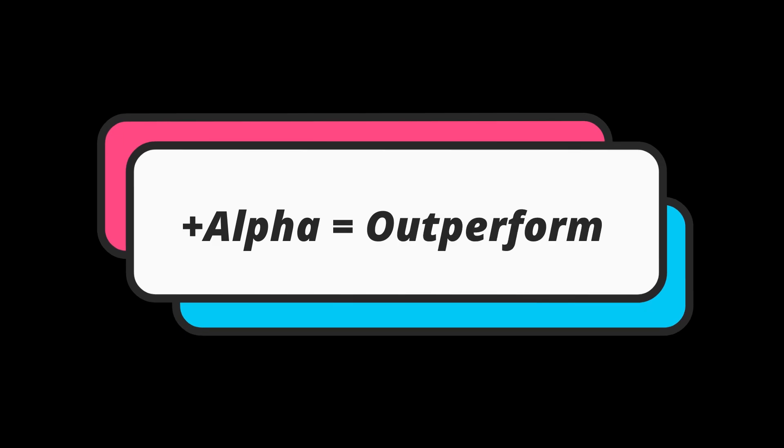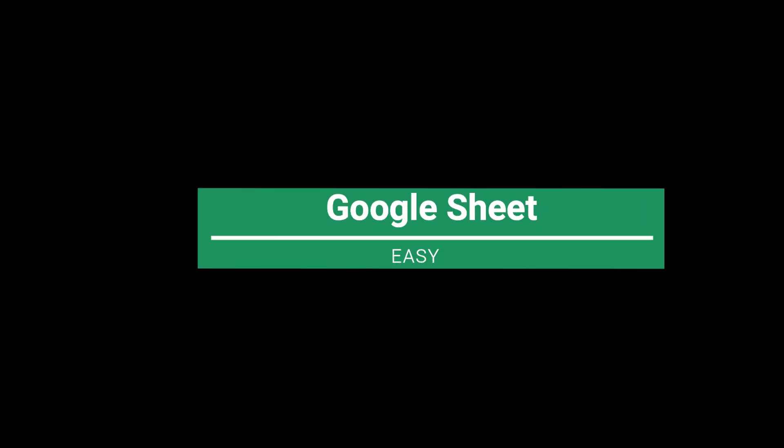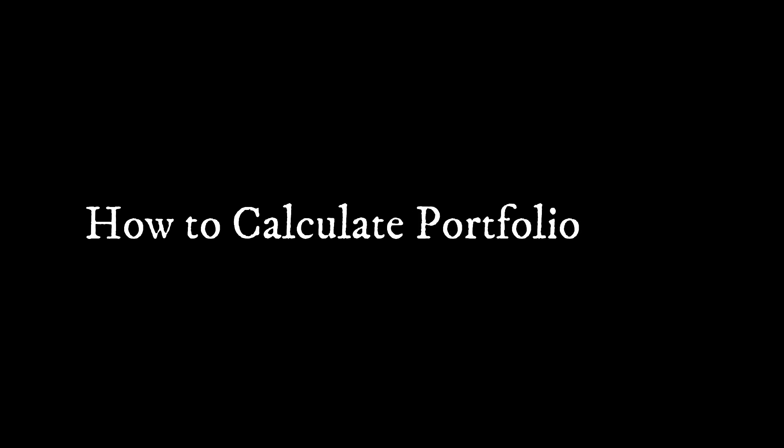If the alpha is positive, that means you have outperformed the market. Now it is a bit tricky to calculate alpha because every single day your stock price is moving up and down and the benchmark is also. There is an easy way to calculate alpha automatically through Google Sheets, and in this video we will learn how you can calculate alpha automatically for your stock portfolio.